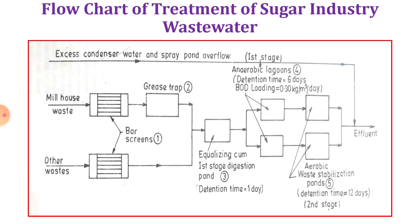After that, the effluent is discharged in a safe manner. Water coming from excess condensate, condenser water, and the spray pond overflow is directly joined to the effluent because it does not need any treatment. This completes the flowchart of sugar industrial wastewater treatment.